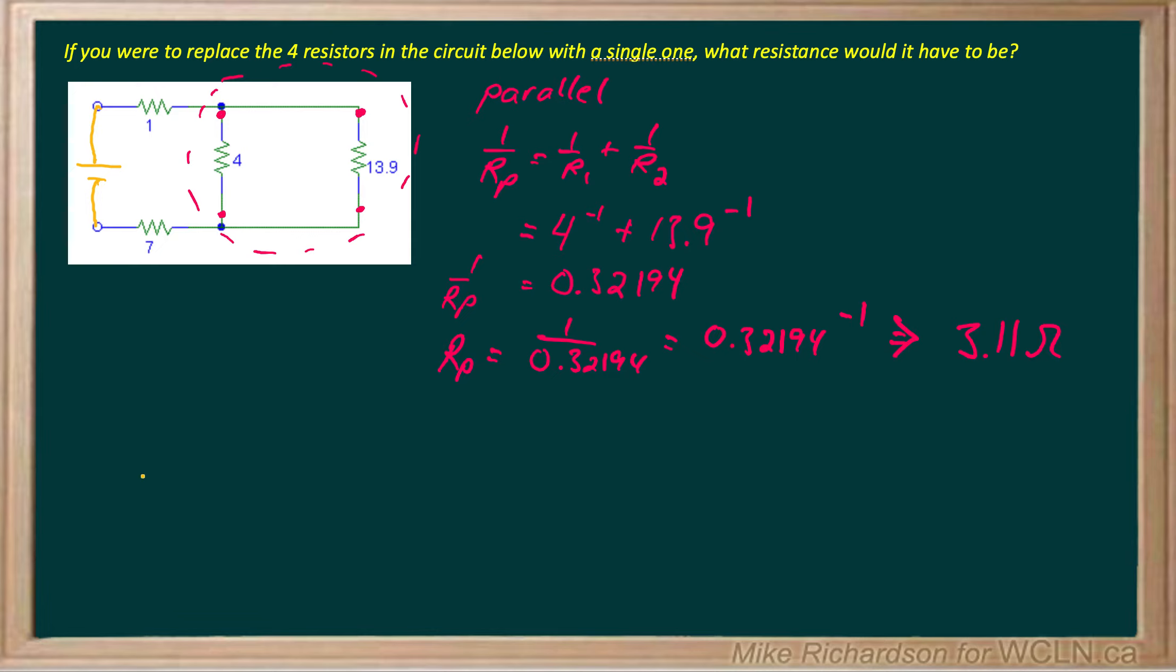Now, you can continue. You can do this any way you like. But if you like, I'm going to just simplify the circuit now. I've still got my 1 ohm resistor at the top. I've still got my 7 ohm resistor at the bottom.